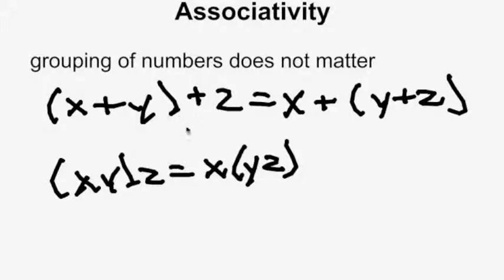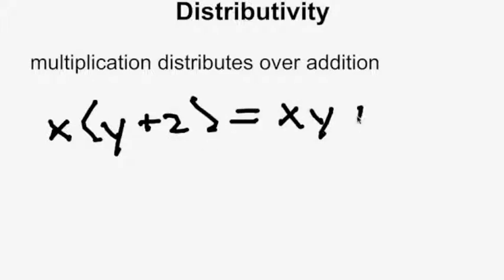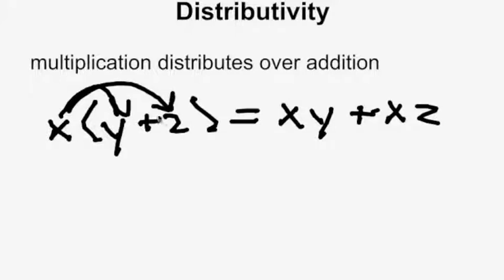The next field axiom is distributivity, which states that multiplication distributes over addition. If you have x times the quantity y plus z, it equals xy plus xz. The x distributes over the addition inside the parentheses.